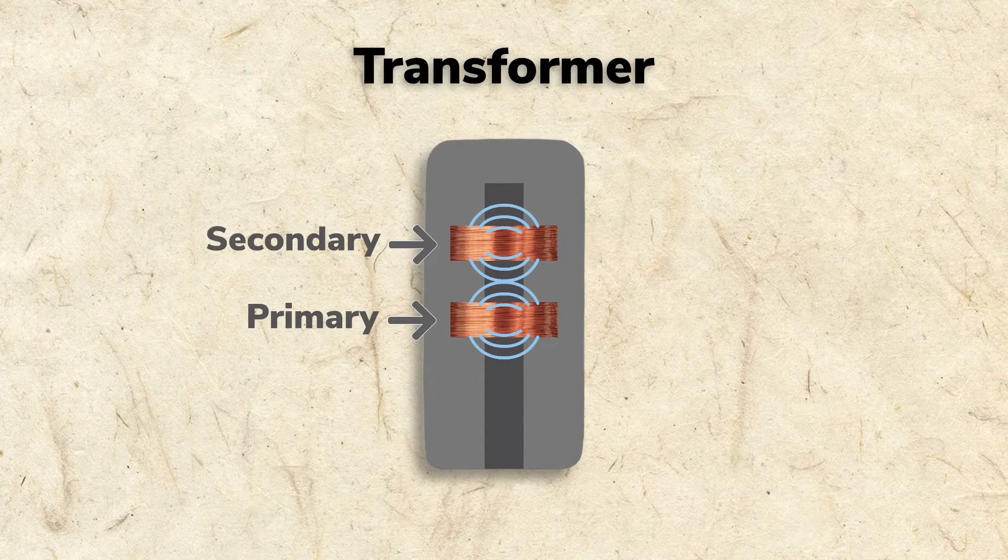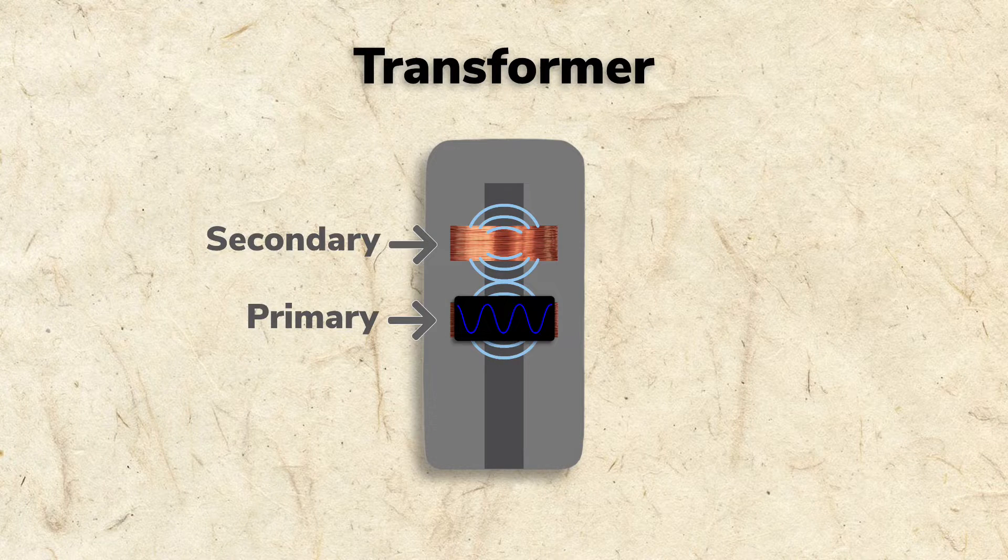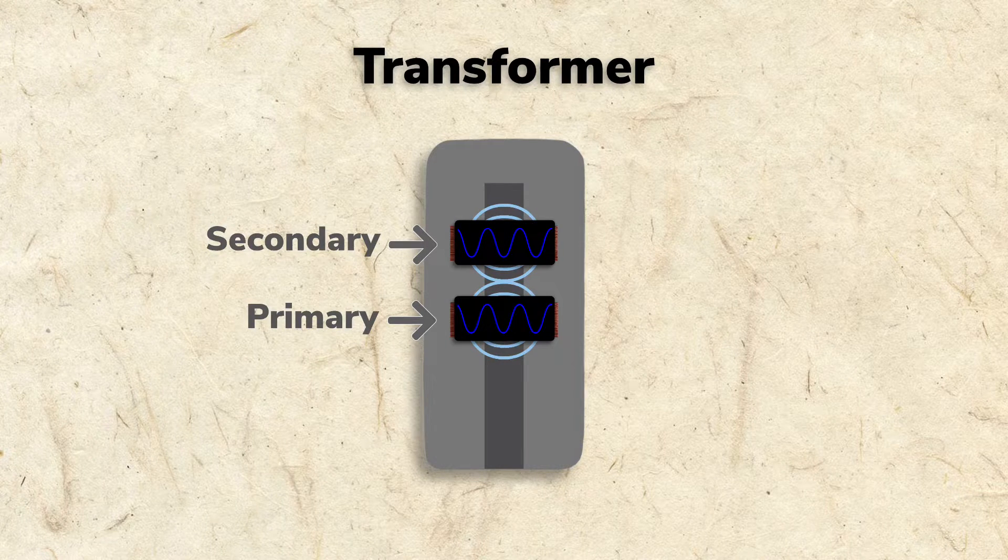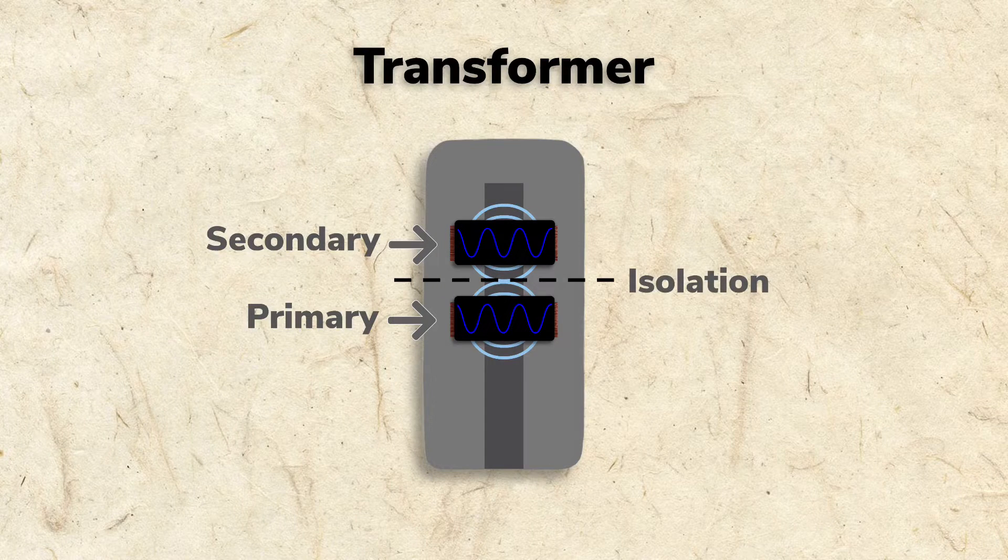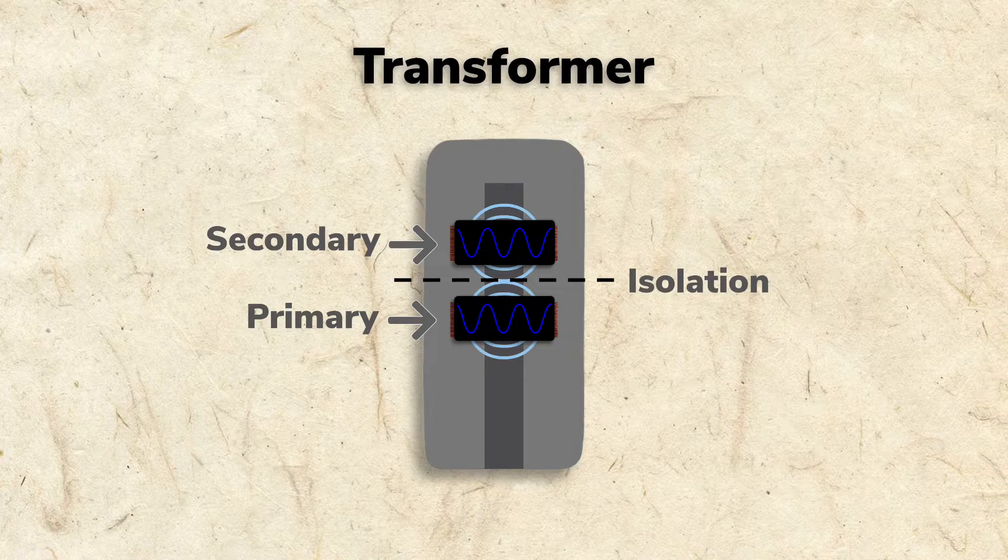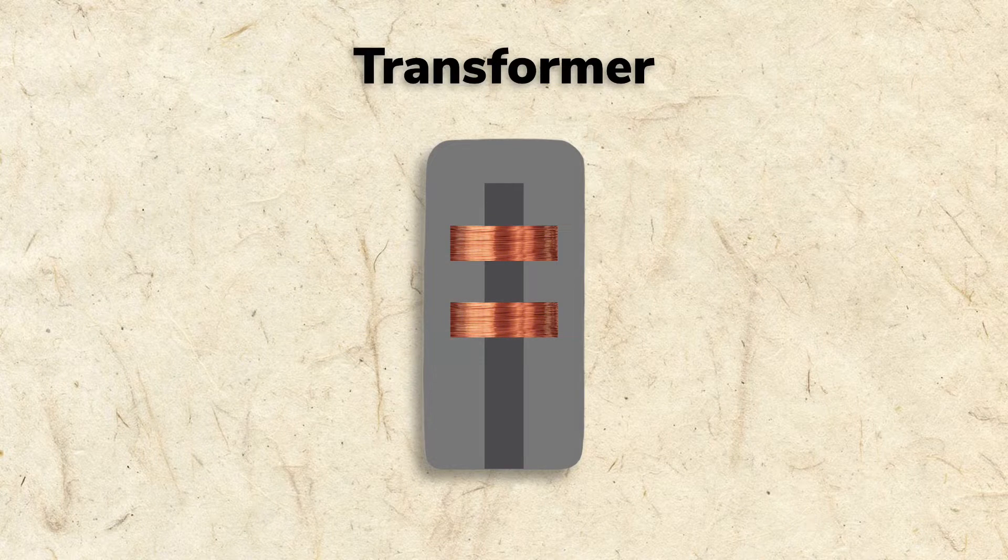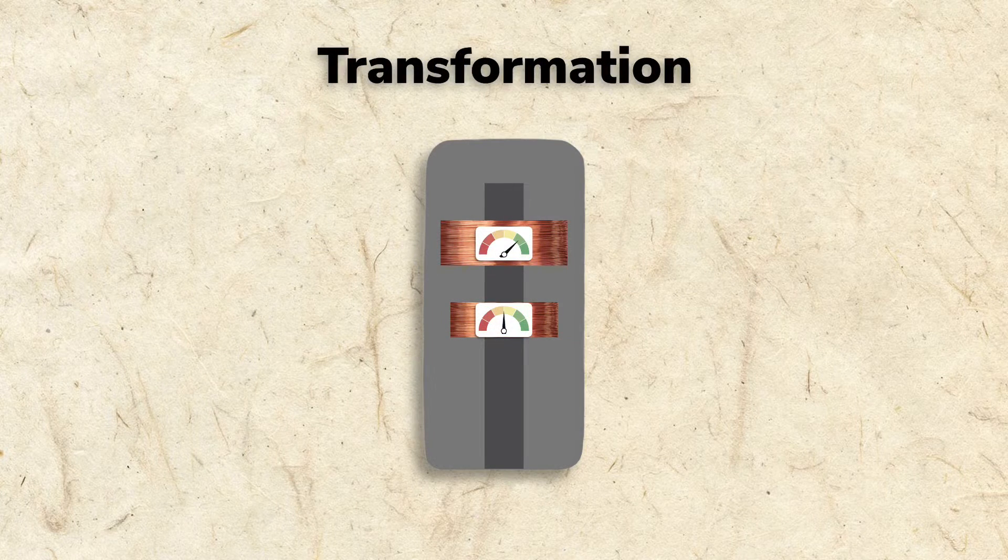Secondary coils pick up the magnetic field, and the signal from the primary is induced in the secondary. The signal transfers magnetically only, and there is no wired connection between the coils. Transformers got their name because they're able to transform voltage.